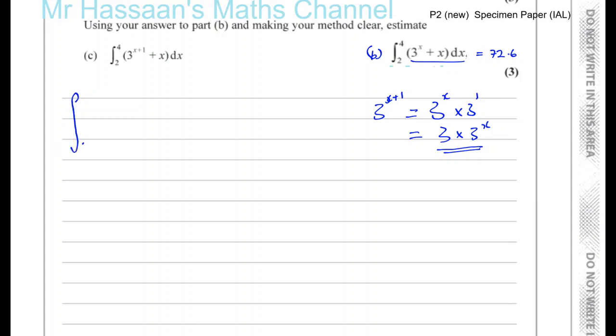So if I rewrite this as 3 times 3 to the power of x, and then I've got plus x dx, so it's looking a bit more similar to this. Now I need to keep everything the same value as this, but I need to incorporate that into this expression. Now, the problem we have here is the 3 is multiplying the 3 to the power of x and not the x.